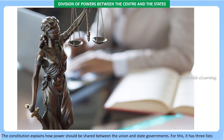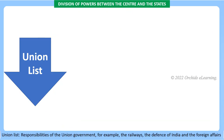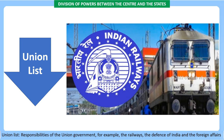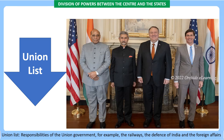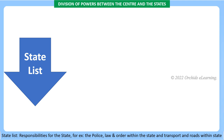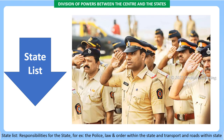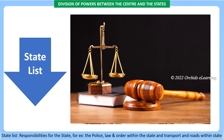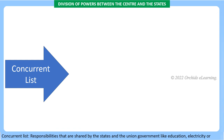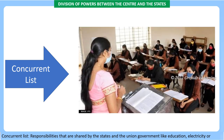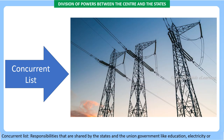The constitution explains how powers should be shared between the union and state governments through three lists. The Union List contains responsibilities of the union government — for example, the railways, the defense of India, and foreign affairs. The State List contains responsibilities of the state — for example, the police, law and order within the state, and transport and roads within the state. The Concurrent List contains responsibilities shared by both states and the union government, such as education, electricity, forests, and wildlife.